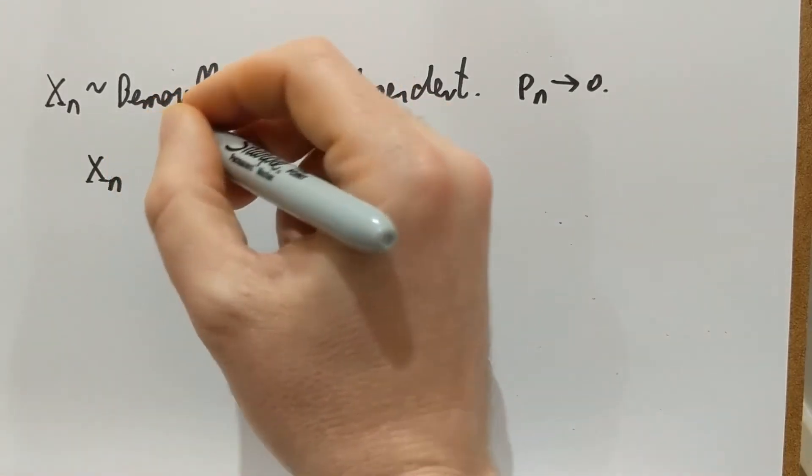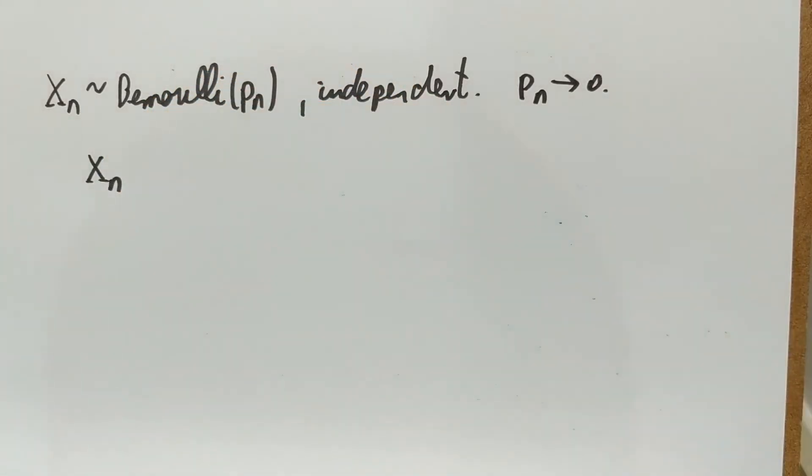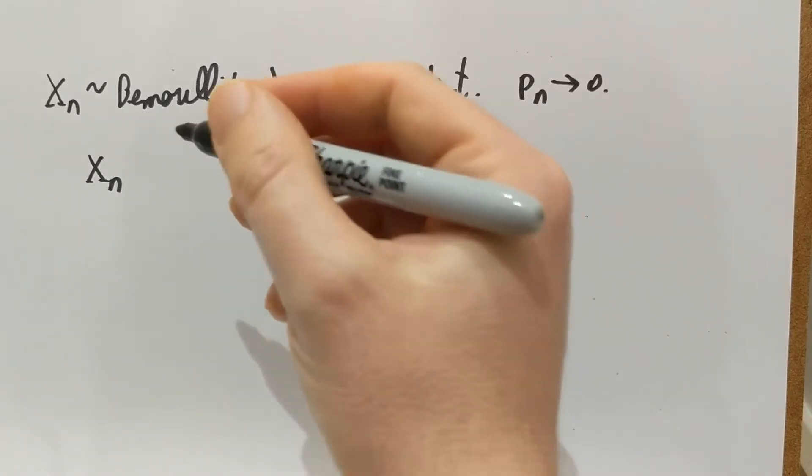Where do we expect Xn to converge, if anywhere? Well since Pn goes to zero, most of the time the Bernoulli will be zero and just with the small Pn probability it will be one, and therefore any reasonable guess can be that this thing will converge to zero.